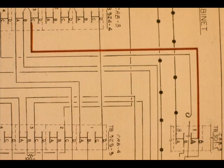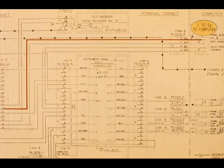The same 1 to 5 volt signal goes to trend recorder number 7 on the credenza. And the voltage drop across the input resistor also goes to the computer.